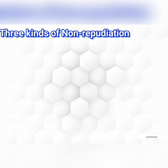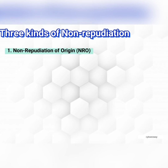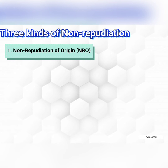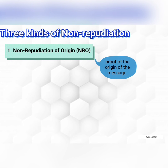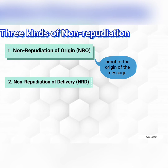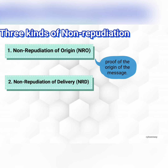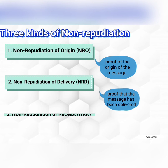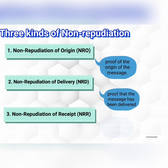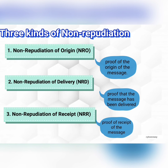Now we'll see what are the different types of non-repudiation. Non-repudiation of origin, NRO — this is to prove the origin of a message. Second, non-repudiation of delivery, NRD — this is to prove the delivery of the message. And third, non-repudiation of receipt, NRR — this is proof of the receipt of the message.